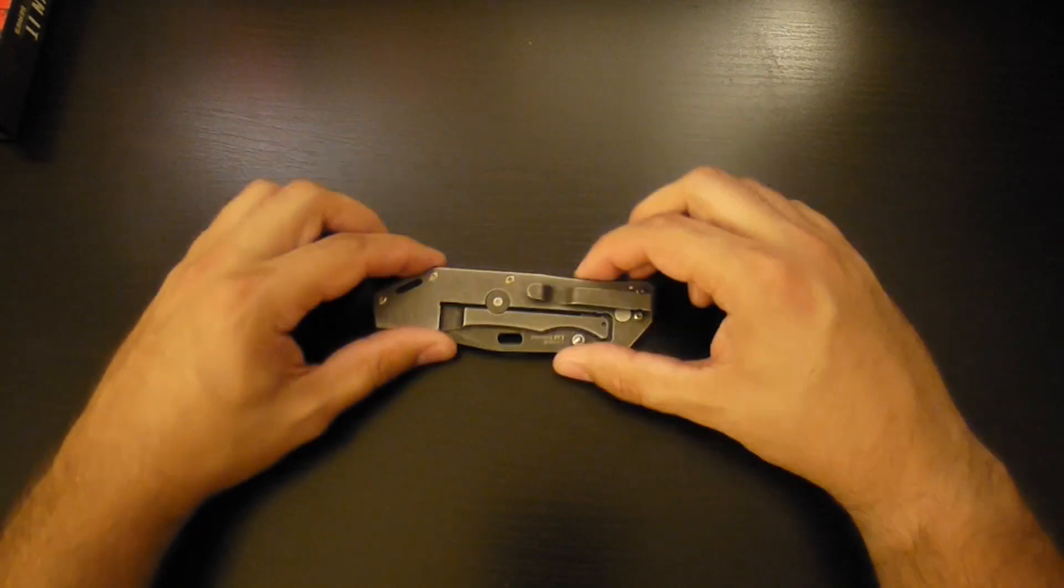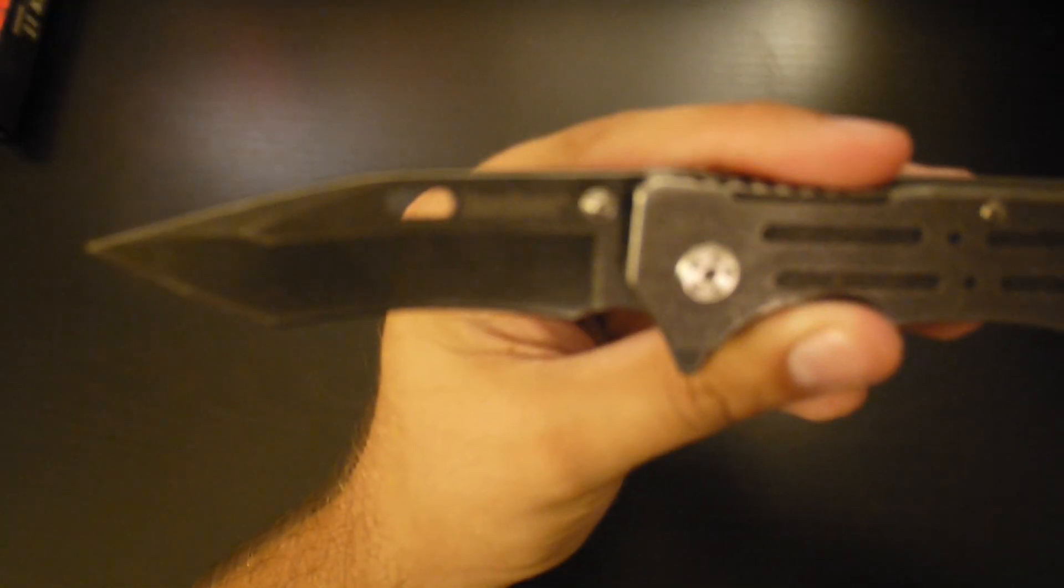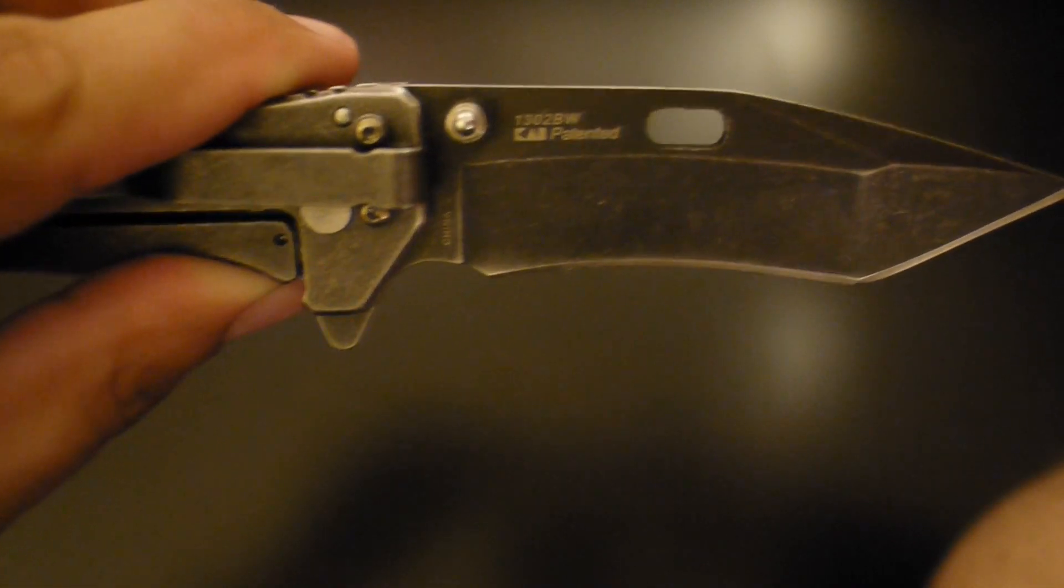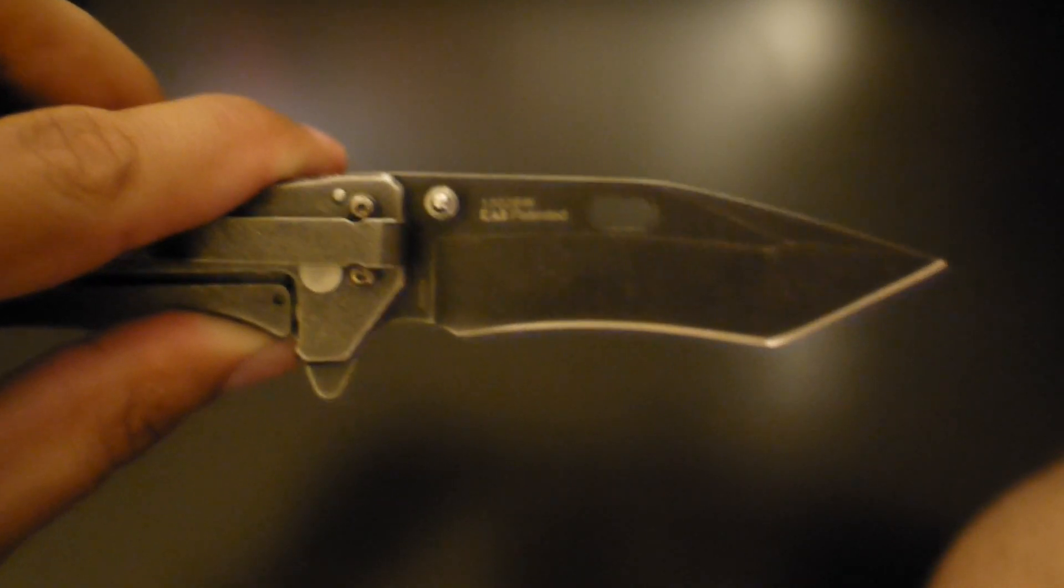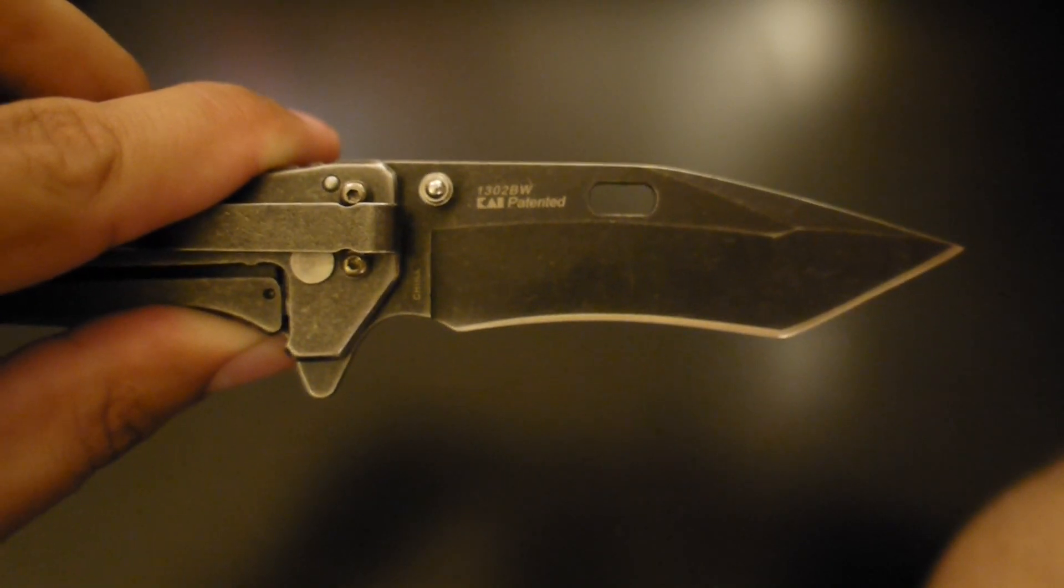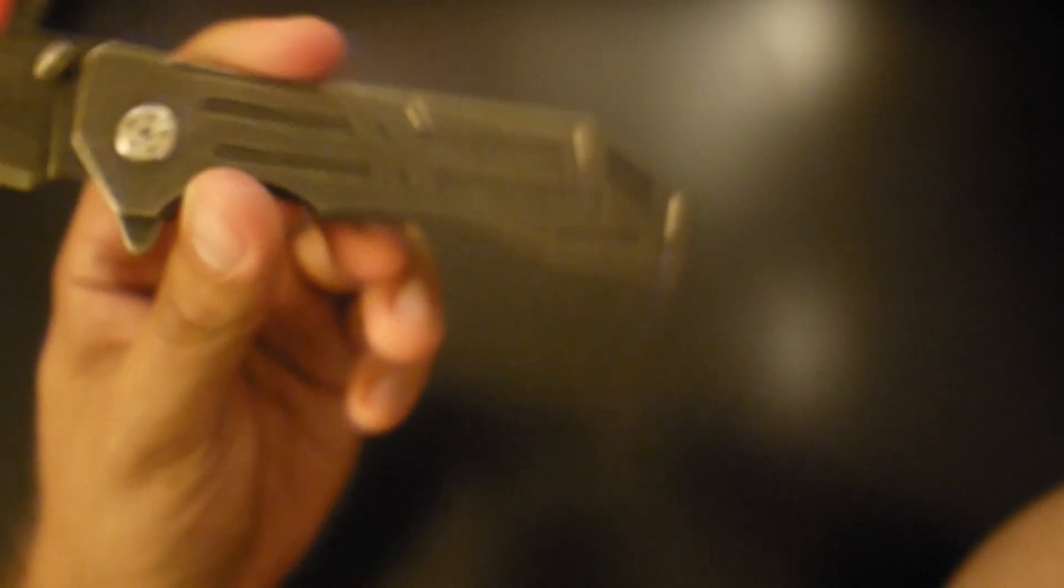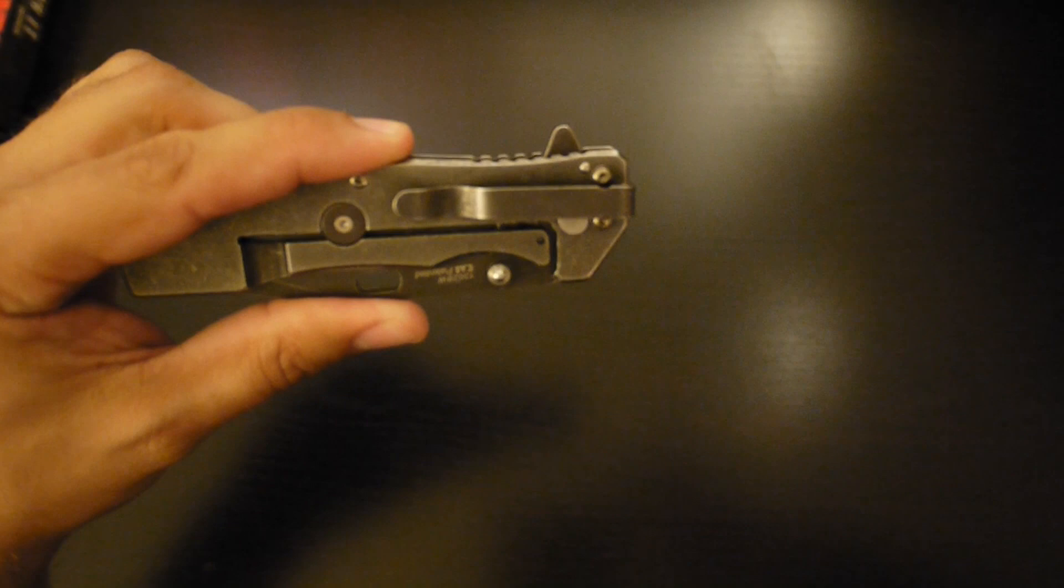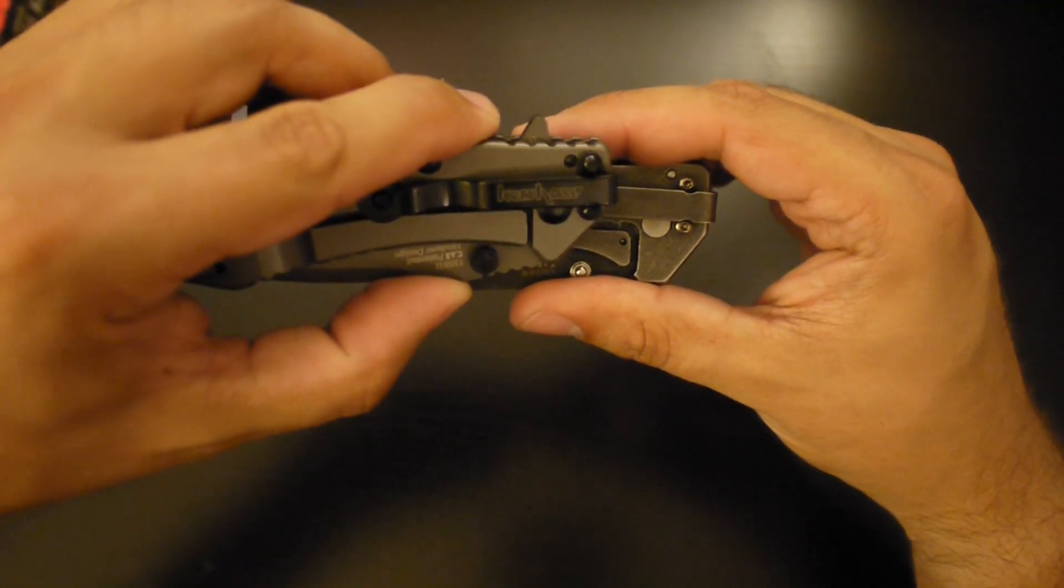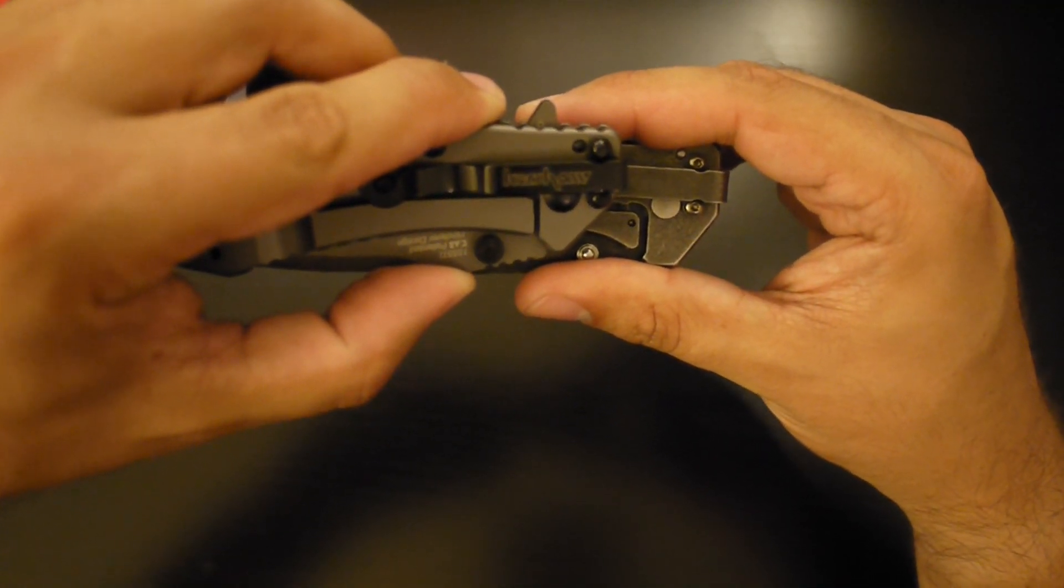So again this is the Lifter. And let's look at a little more. You got the Kershaw logo. And on the back you have the 1302BW for blackwash. And there's no logo on the handle. And no logo on the pocket clip. The Cryo does have the logo on the pocket clip.